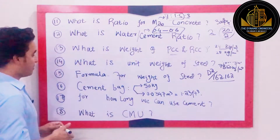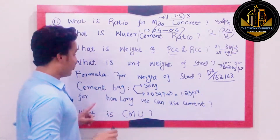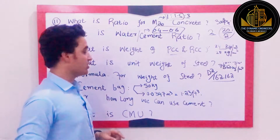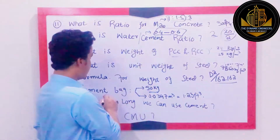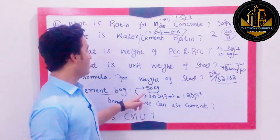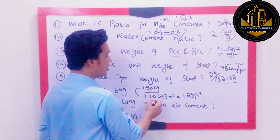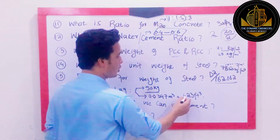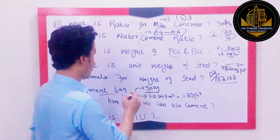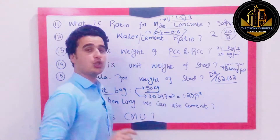Questions 16 and 17 are about cement bags, and are very important for site engineers and quantity surveyors. In Pakistan, India, UAE, Qatar, and similar countries, a standard cement bag weighs 50 kg. That bag has a volume of 0.0347 cubic meters, which is equal to 1.23 cubic feet. Write down these values as they are important for exams.